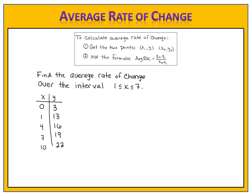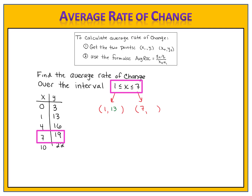Let's compare answers. The key to finding the two points is looking at that interval — x goes from 1 to 7. Those are x values, so we write them in the x position of the ordered pairs: 1 comma something and 7 comma something. We use the table to get the corresponding y value. When x is 1, y is 13, so the first point is (1, 13). When x is 7, y is 19, so the second point is (7, 19).